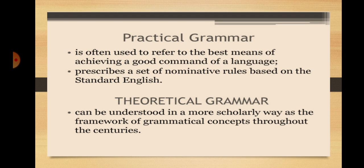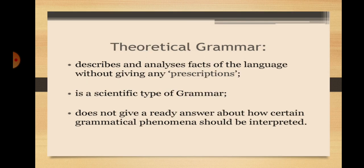Grammar can be practical and theoretical. Practical grammar is often used to refer to the best means of achieving a good command of a language. It prescribes a set of normative rules based on standard English. Theoretical grammar can be understood in a more scholarly way as the framework of grammatical concepts throughout the centuries. It describes and analyzes facts of the language without giving any prescriptions — it is a scientific type of grammar and does not give ready answers about how certain grammatical phenomena should be interpreted.